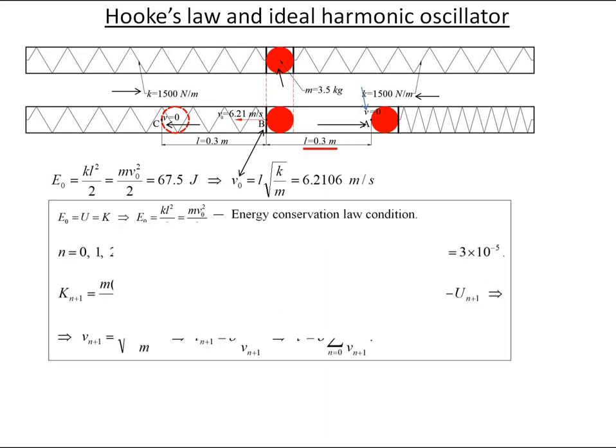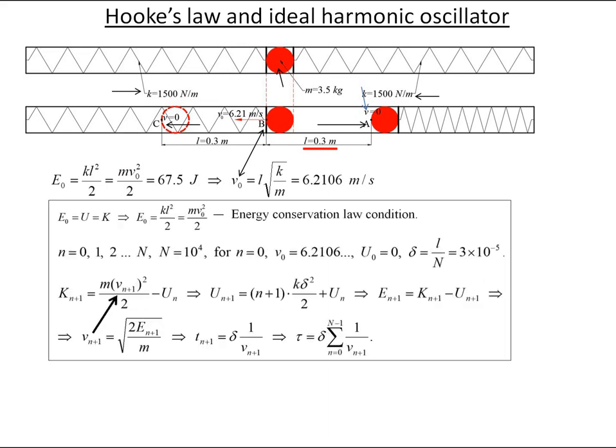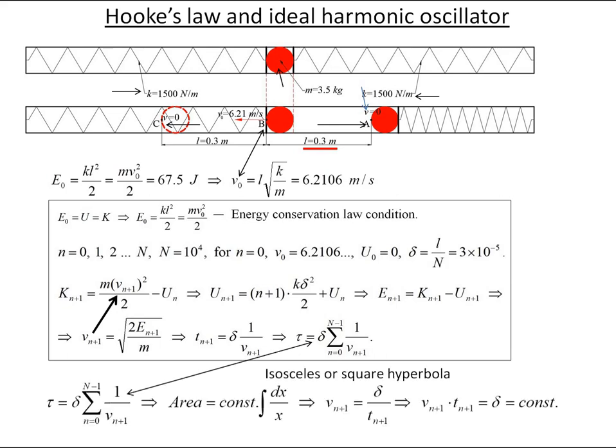Here are initial conditions for period tau calculation. Together with initial conditions, the algorithm shows simple kinetic energy of velocity transition into potential energy of a spring in the process of contraction. The last equation in the sequence of equations is a very familiar equation from math textbooks: isosceles or square hyperbola.